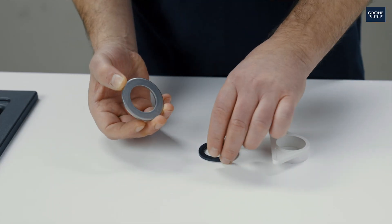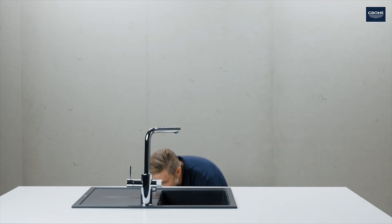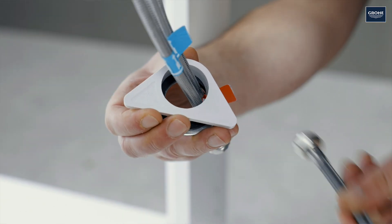Then assemble the fastening set as shown. Pass it over the hoses of the tap from below.